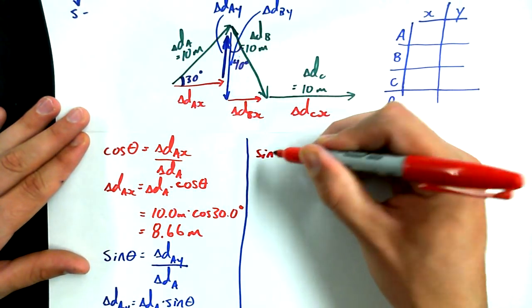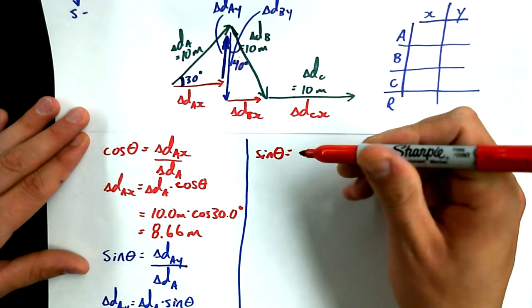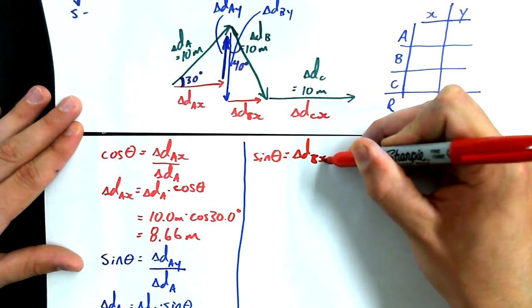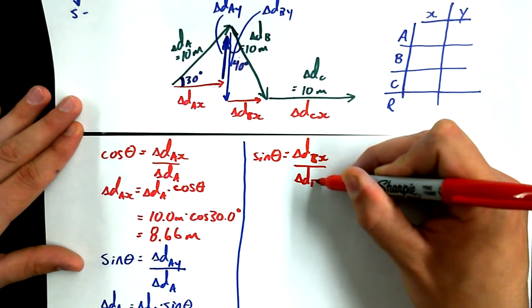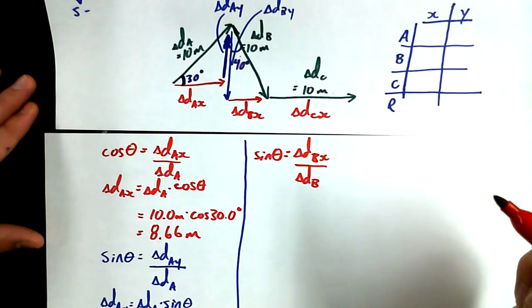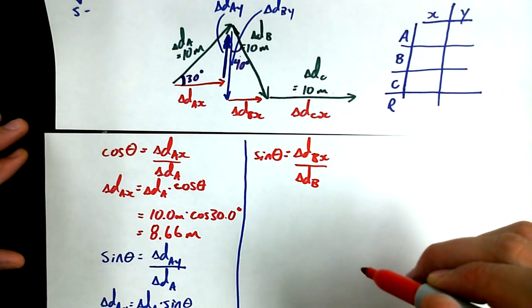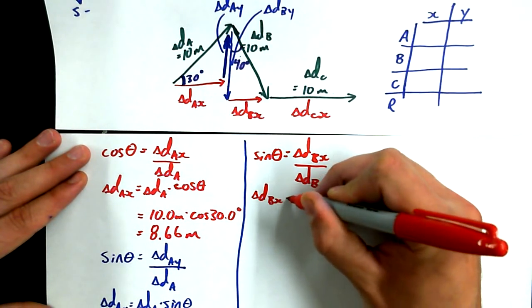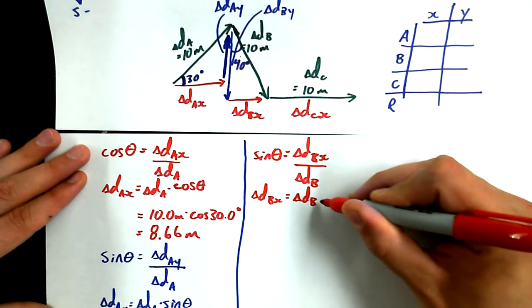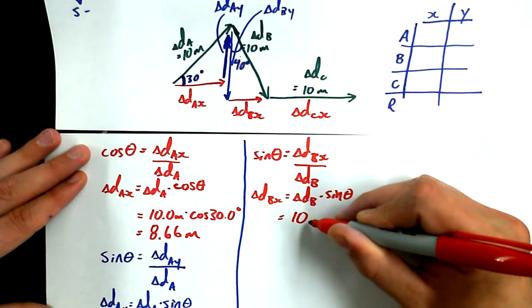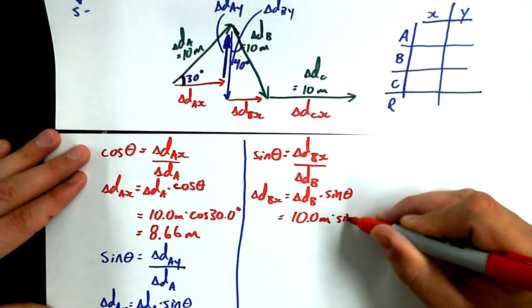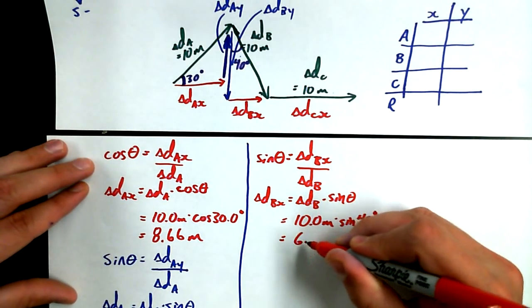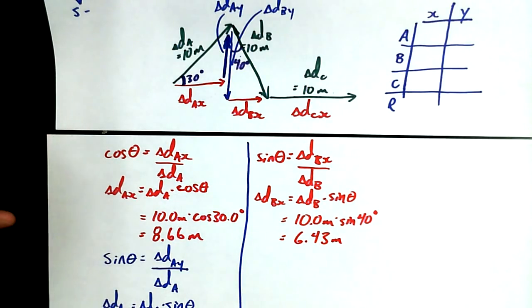So I say sine of theta to get the x component for the second triangle is equal to opposite over hypotenuse, delta dbx over the hypotenuse delta db, and I want to get delta dbx all by itself. So delta dbx is equal to delta db times sine of theta, or 10.0 meters times sine of 40 degrees, and if you plunk it into your calculator, you end up getting 6.43 meters, roughly.